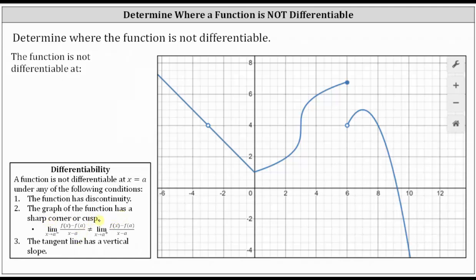And this is because as the slope of the secant line approaches the slope of the tangent line from the left and right of x equals a, the slopes are not the same. And number three, the tangent line has a vertical slope.